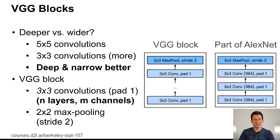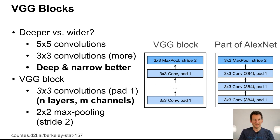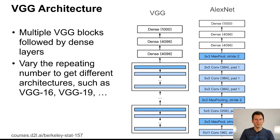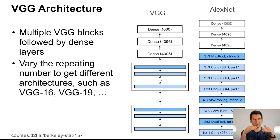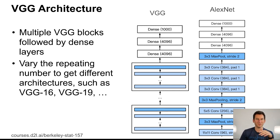In the VGG block, you have a bunch of 3x3 convolutions. With padding of one, the input size doesn't change relative to the output, and at the end you have max pooling of 2x2 with a stride of two, which halves the resolution. If you stack several of those blocks together and add dense layers identical to AlexNet at the end, you get VGG — and an entire family of different architectures simply by varying the number of blocks combined.